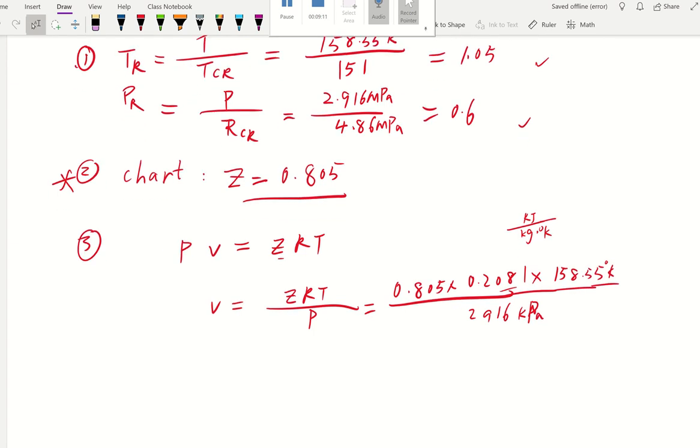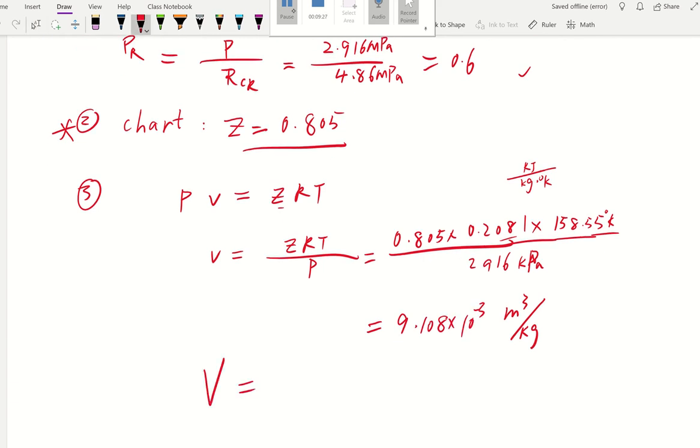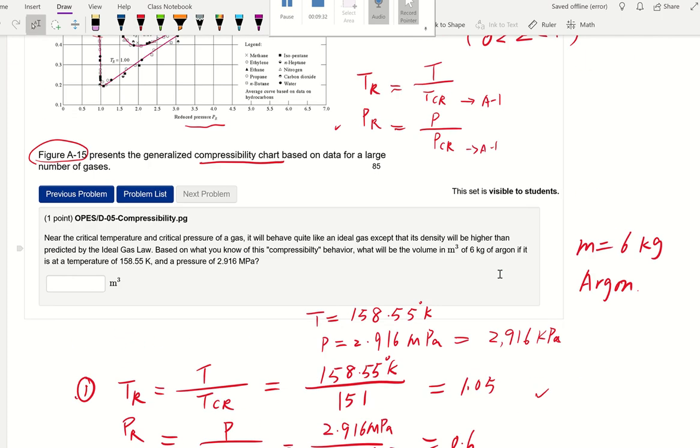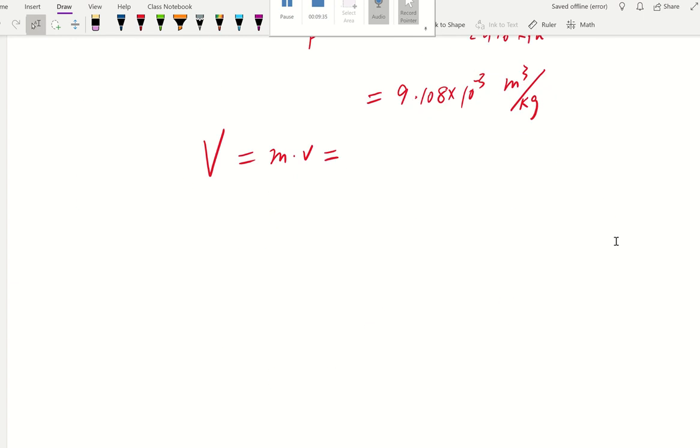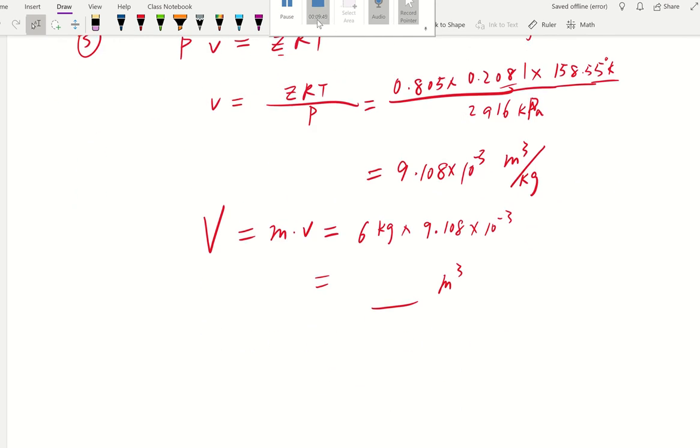All right. So doing all that, we should get the correct unit of meter cube per kilogram. Let's pause and see what we got for this value. The value I have is very small. It's 9.108 times 10 to negative 3. That's specific volume. If we're going to get big V, that's going to be mass times our specific volume. And I believe the mass is given for this problem. It's 6 kilogram. So 6 kilogram times 9.108 times 10 to negative 3. That will give us a unit of meter cube.